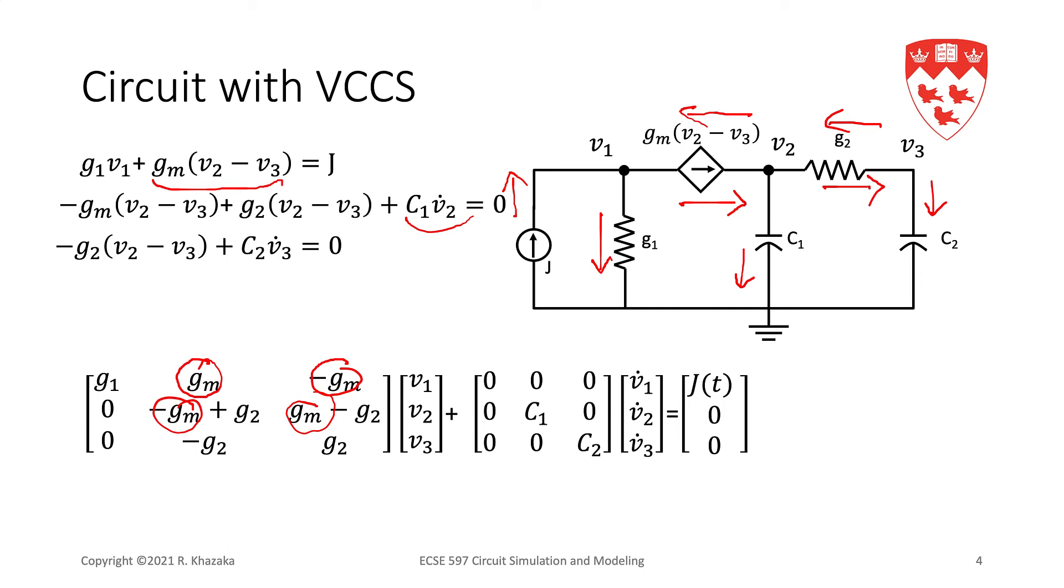It looks a little bit like the resistor stamp, except that it's not symmetric. The current source appears in row 1 and row 2, because it is connected to node 1 and node 2, and therefore, it appears in the KCL equations at row 1 and row 2. However, the controlling voltages are V2 and V3, so the Gm will appear in column 2 and column 3, because the controlling voltages are V2 and V3.